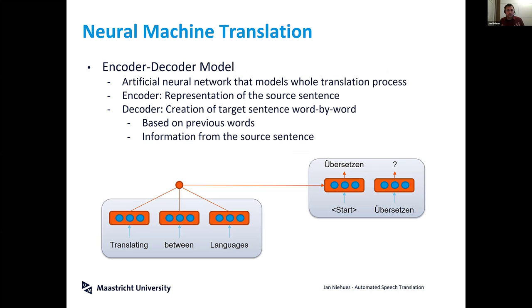This is what we refer to as neural machine translation — a model which consists of two parts: on the left side the encoder, which deals with the source language, and then the decoder, which deals with the target language.